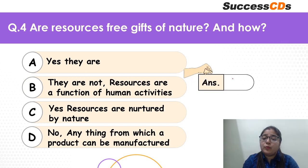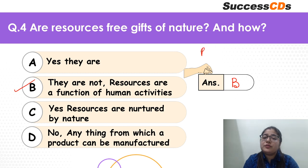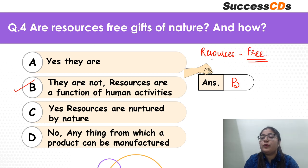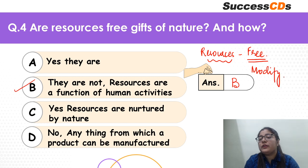If you have prepared well for this chapter, you would know the answer is option B. Resources are not simply free — they have to involve a certain kind of human activity. Only then are they modified and then they satisfy human wants.